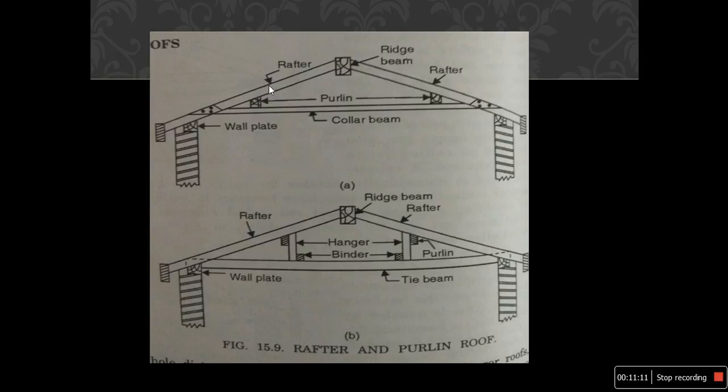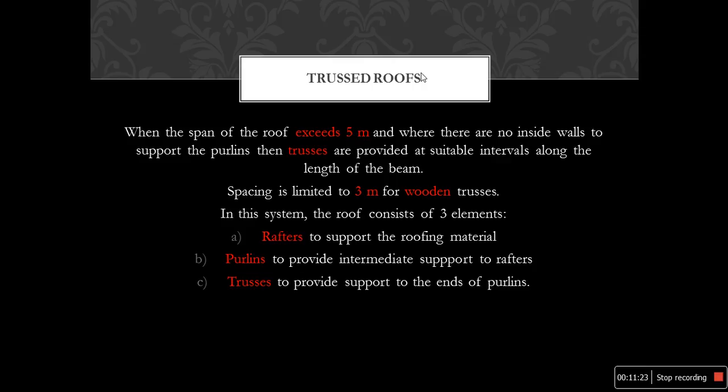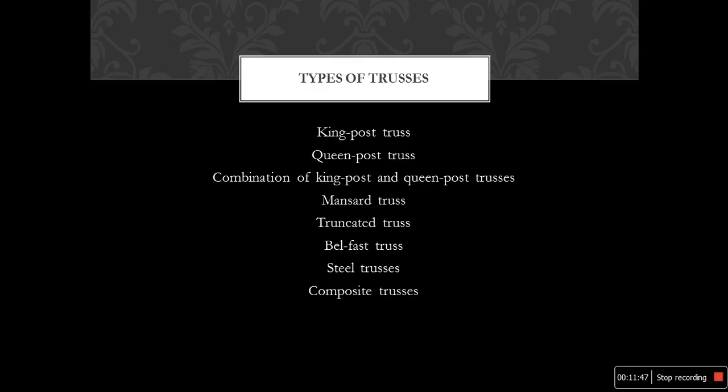Truss roofs are constructed when the span exceeds 5 meters and there are no inside walls to support the roofs. The spacing is limited to 3 meters for wooden trusses. In this system the roof consists of three elements: rafters, purlins, and trusses. The types of trusses include king post, queen post, combination of king and queen post, mansion truss, truncated, Belfast, steel trusses, and composite trusses.